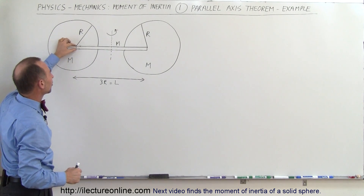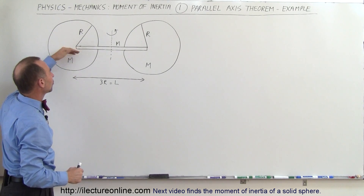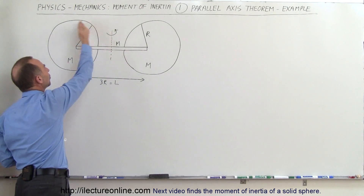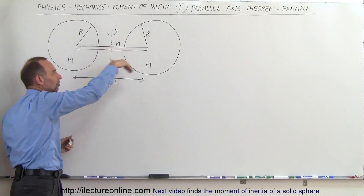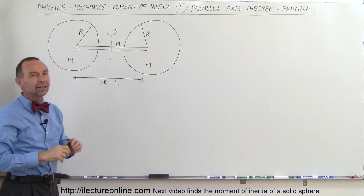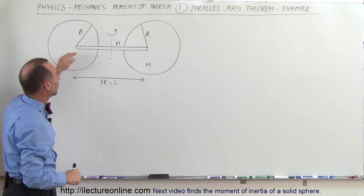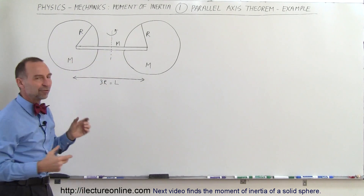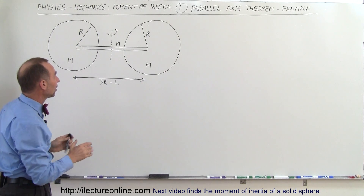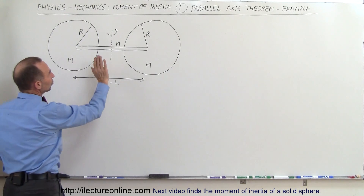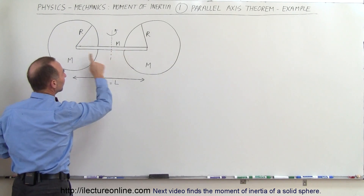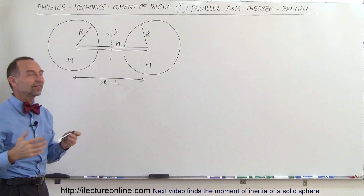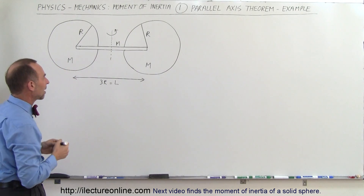Notice that the diameter of the bar is relatively small, so we can ignore the fact that it's intruding into the sphere. You can almost assume that these spheres are complete with no cutout, so the bar is not really making any difference in the moment of inertia of the spheres themselves. This whole contraption will be rotating, so what is the moment of inertia of this interesting contraption?